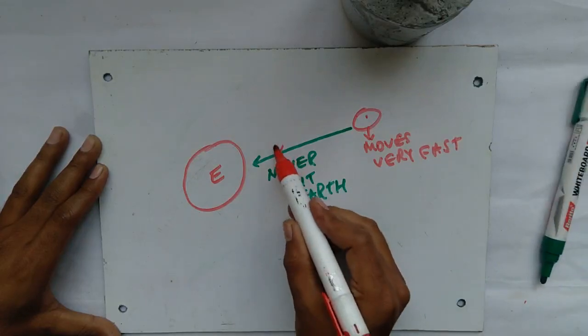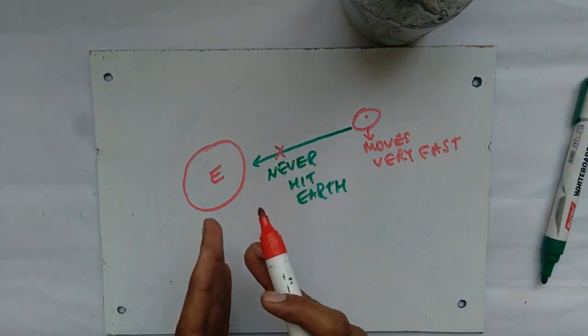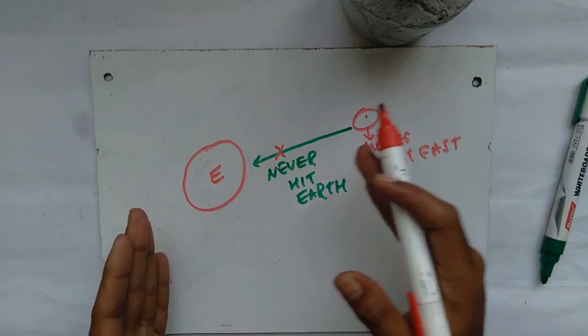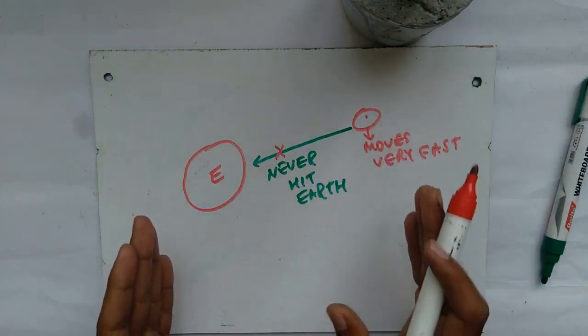This is because the distance between them is very high, and the object is moving very fast.